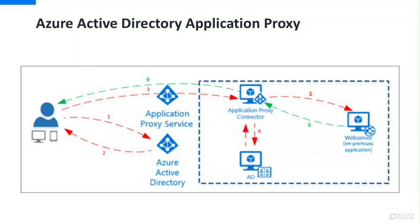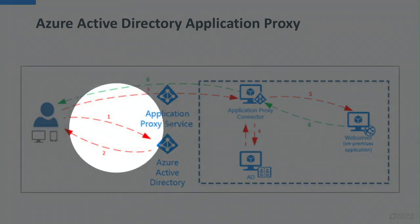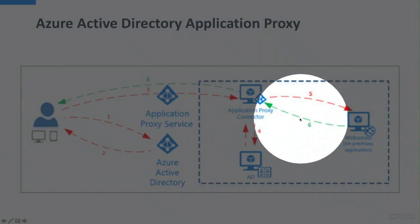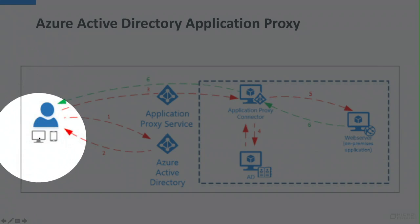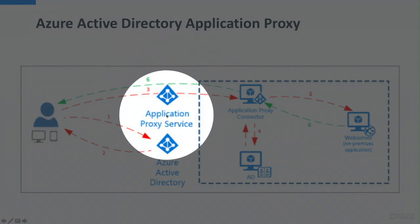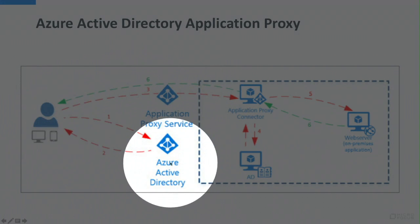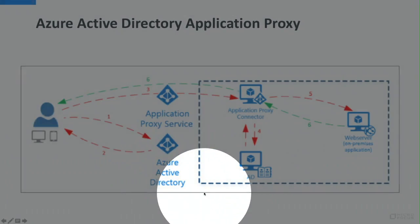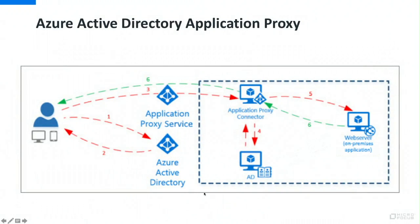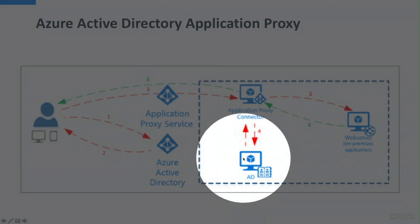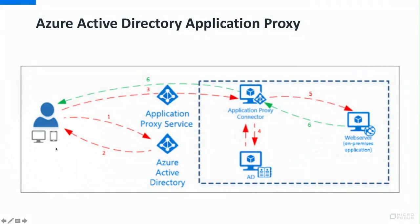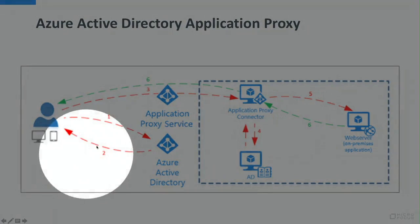If you're familiar with Azure Active Directory Application Proxy, you basically have your intranet and a web application you want to expose to remote employees. Employees connect to the application proxy, get redirected to Azure Active Directory where their credentials are checked against your own Active Directory instance, and then receive a token to authenticate against the application proxy.